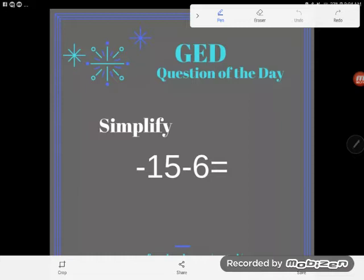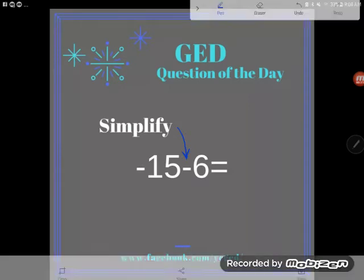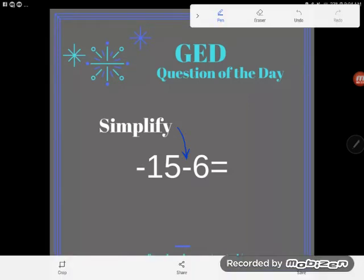You can see the directions say simplify, which just means perform the indicated operation, do what the symbols tell you to do. And the symbols tell me that I'm going to take negative 15 and minus 6. So negative 15 minus 6.